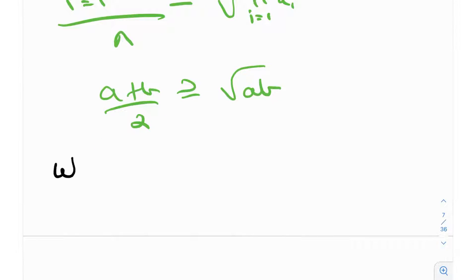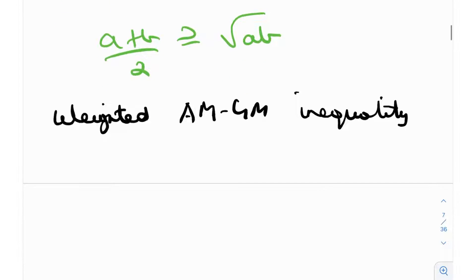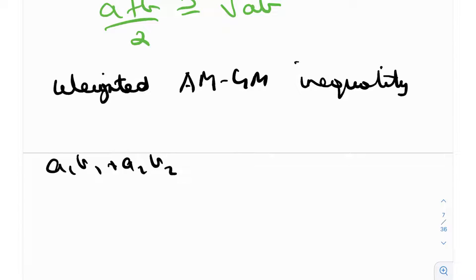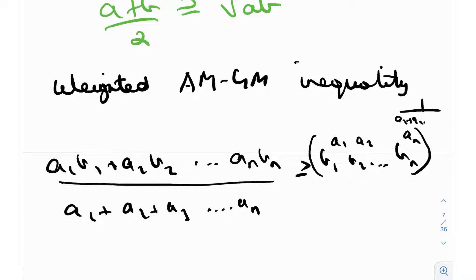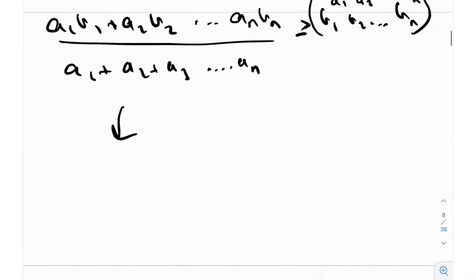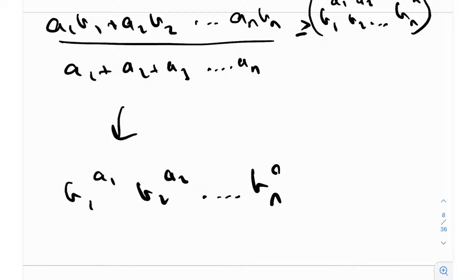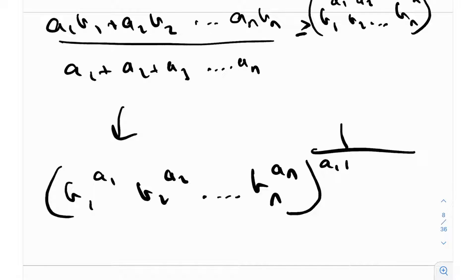Now for the weighted AM-GM inequality. It states that (a₁b₁ + a₂b₂ + … + aₙbₙ) / (a₁ + a₂ + … + aₙ) ≥ (b₁^a₁ · b₂^a₂ · … · bₙ^aₙ)^(1/(a₁+a₂+…+aₙ)). So the weighted average on the left-hand side — Σ(aᵢbᵢ)/Σaᵢ — is greater than or equal to the weighted geometric mean on the right-hand side. This is the statement of the weighted AM-GM inequality.